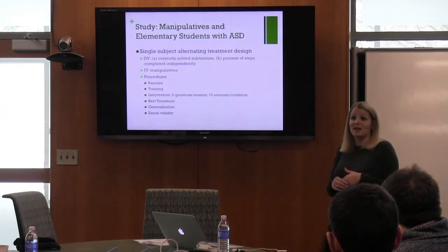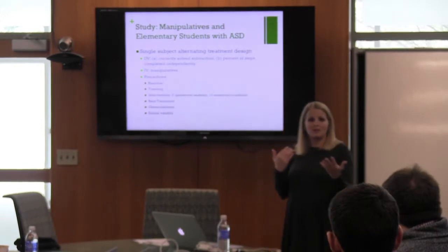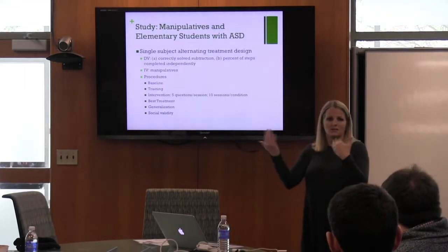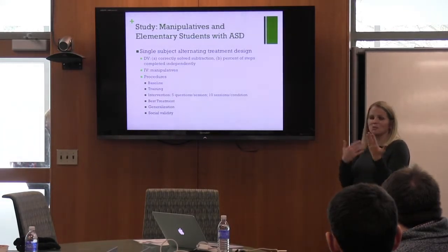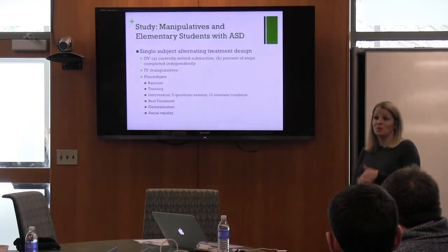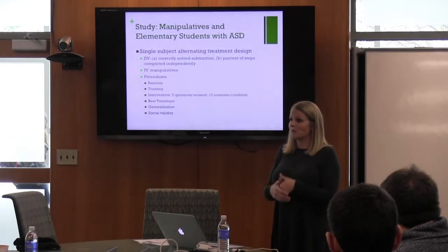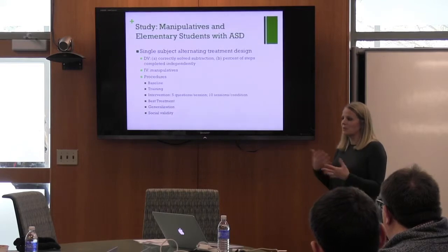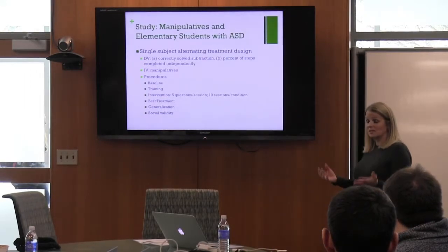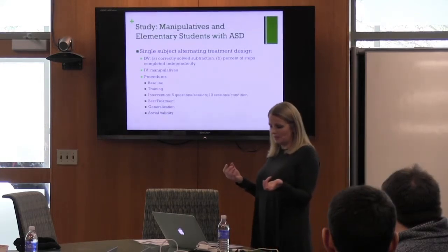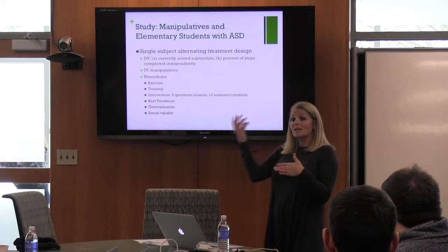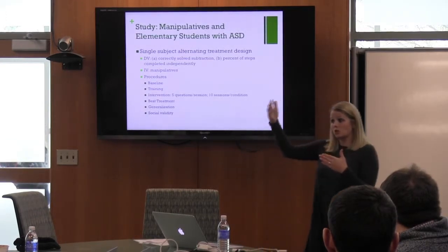The alternating treatment literally alternated the treatment during intervention. The independent variable was the manipulatives, with two conditions: virtual and concrete, alternated in random order with no more than two sessions back-to-back of the same condition. In baseline, we asked them to solve their subtraction problems. Then a training phase taught them how to use each type of manipulative. During intervention, we collected data using the same assessments as baseline but with access to concrete and virtual manipulatives.